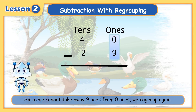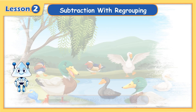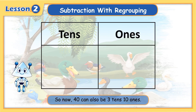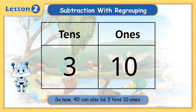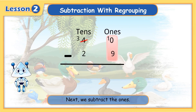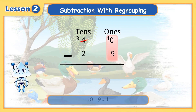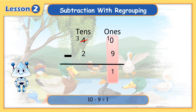Since we cannot take away nine ones from zero ones, we regroup again. So now, forty can also be three tens, ten ones. Next, we subtract the ones. Ten minus nine equals one.